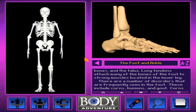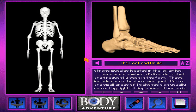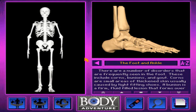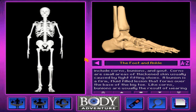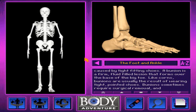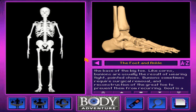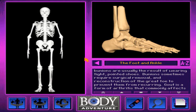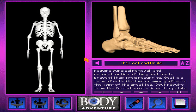There are a number of disorders that are frequently seen in the foot. These include corns, bunions, and gout. Corns are small areas of thickened skin usually caused by tight fitting shoes. A bunion is a firm, fluid-filled lesion that forms over the base of the big toe. Like corns, bunions are usually the result of wearing tight pointed shoes. Bunions sometimes require surgical removal and reconstruction of the great toe to prevent them from recurring.